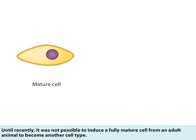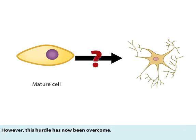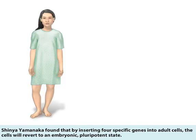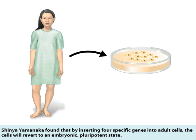Until recently, it was not possible to induce a fully mature cell from an adult animal to become another cell type. However, this hurdle has now been overcome. Shinya Yamanaka found that by inserting four specific genes into adult cells, the cells will revert to an embryonic pluripotent state.